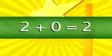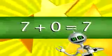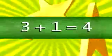A number plus zero equals the same number, just stay there, just stay there. A number plus one equals the next number, just count up.